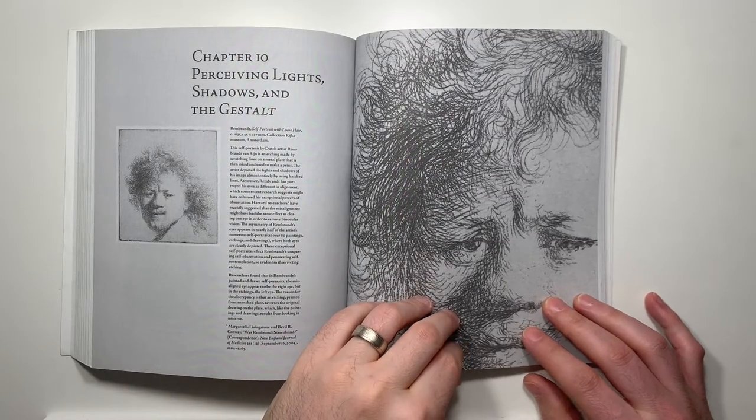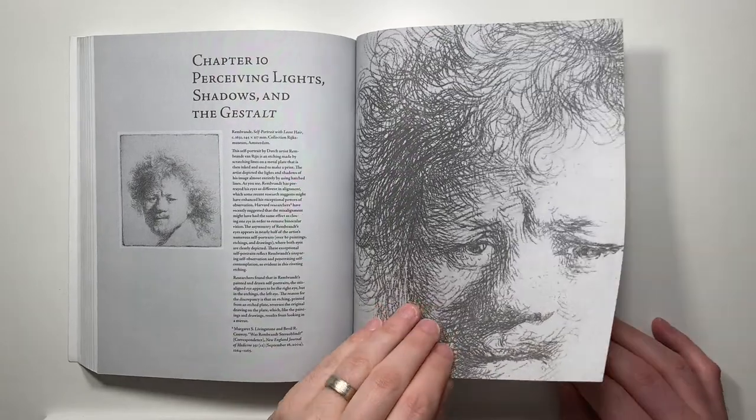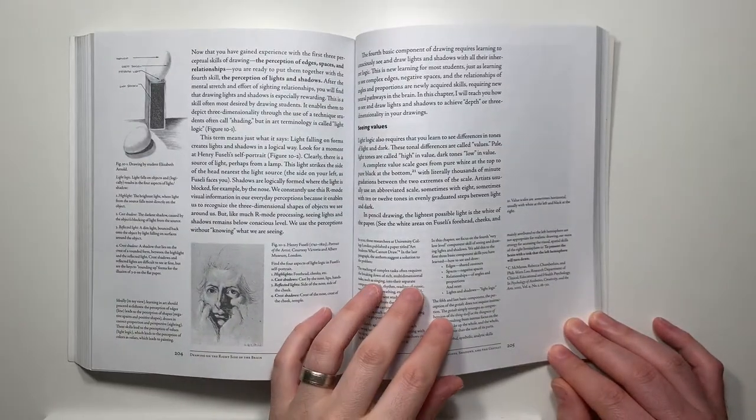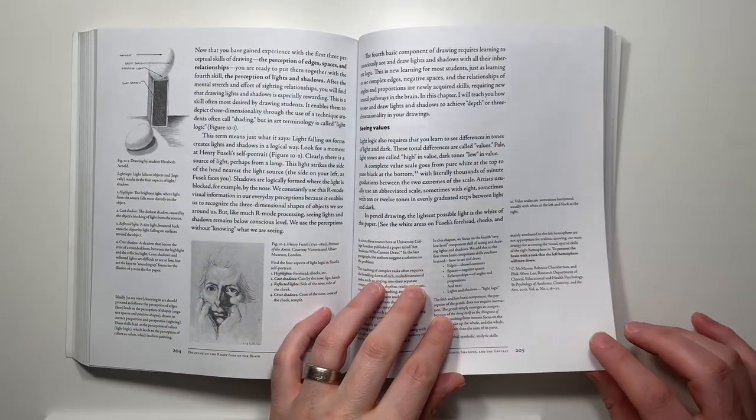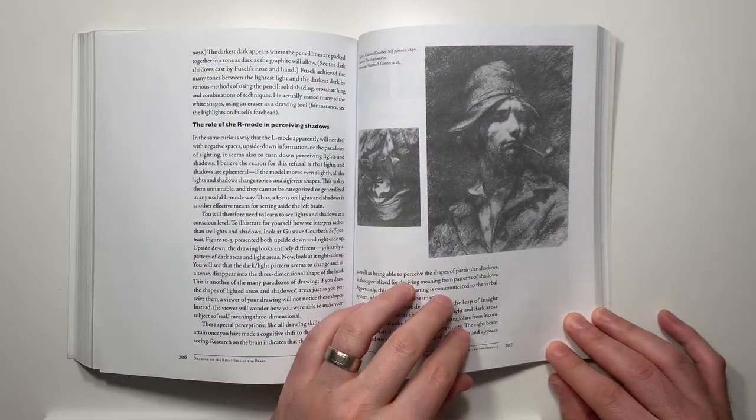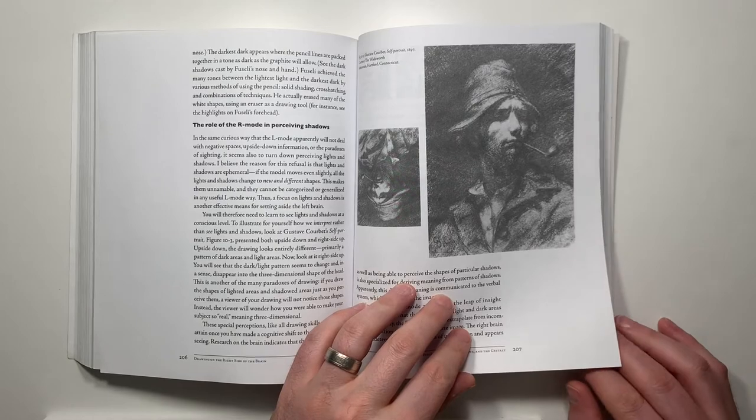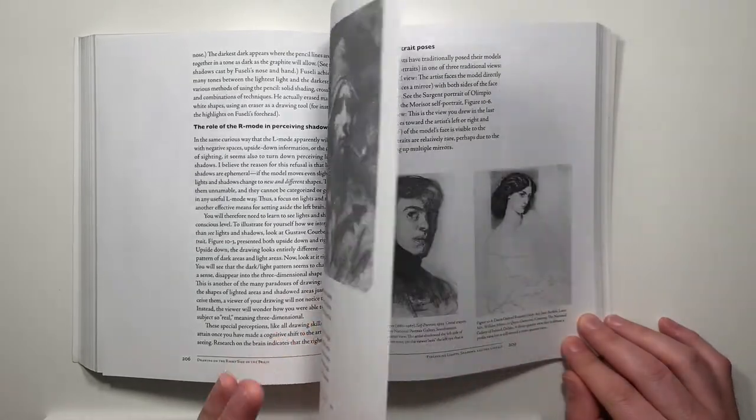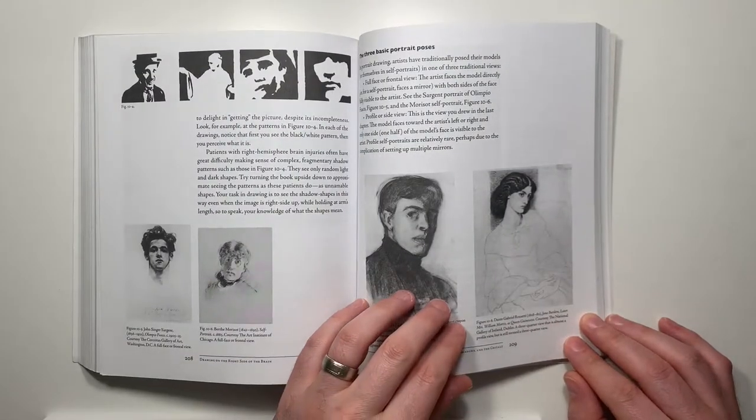The chapters leading up to chapters 9 and 10 in Drawing on the Right Side of the Brain cover three perceptual skills of drawing: the perception of edges, spaces, and relationships. In chapter 10, Betty Edwards covers the fourth perceptual skill, the perception of lights and shadows.